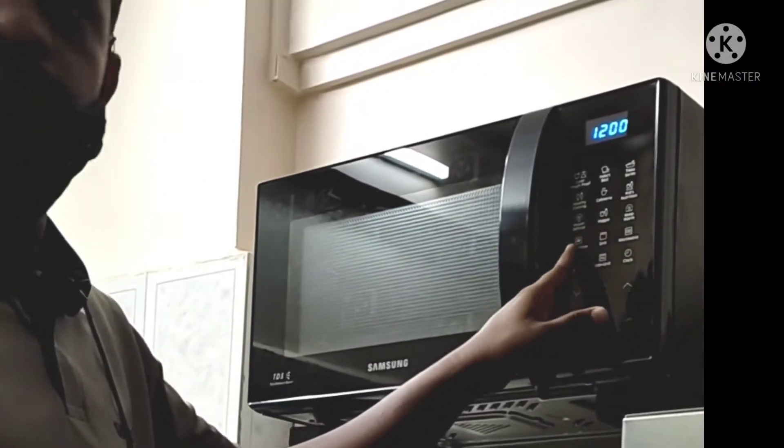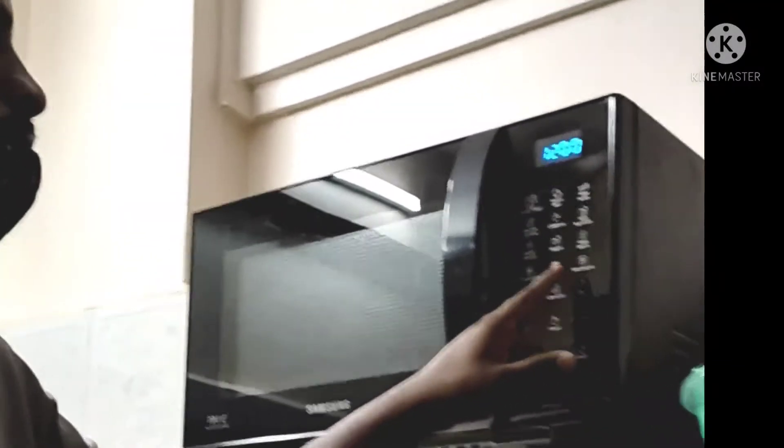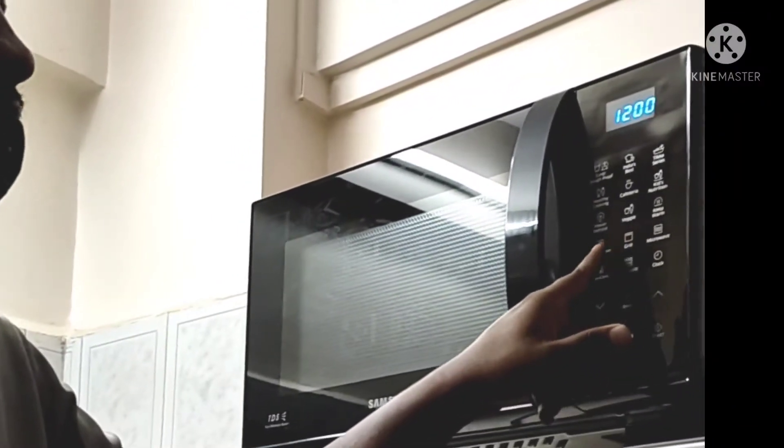We have three modes: Microwave, Grill, and Convection. Microwave is for heating, Grill is for grilling and frying, and Convection is for baking.